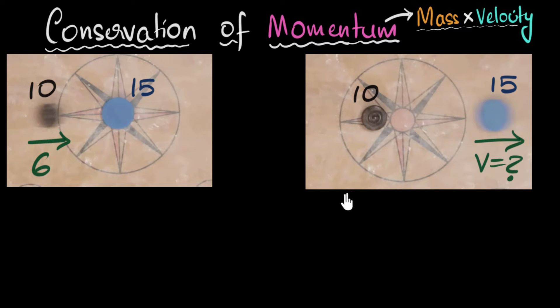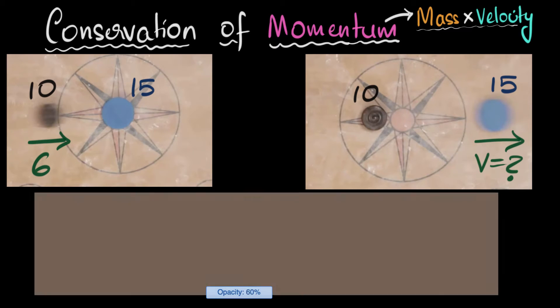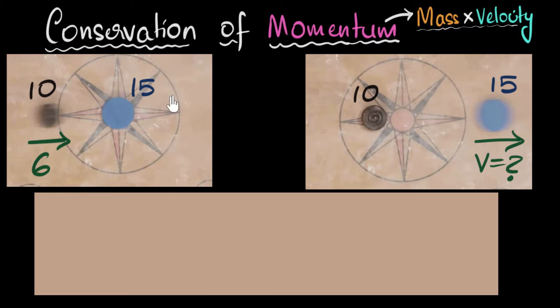How do we solve this? Well, we can use conservation of momentum to do that. First, let me change the background though, because I want to use the same colors and it's not visible on black. Okay, now to use conservation of momentum, first we need to calculate the total momentum before collision. That will be mass into velocity of the black coin, which is gonna be 10 into 6, plus the mass into velocity of the blue coin, which is 15 into 0, because the blue coin is not moving at all. It's at rest. That should equal its total momentum after collision.